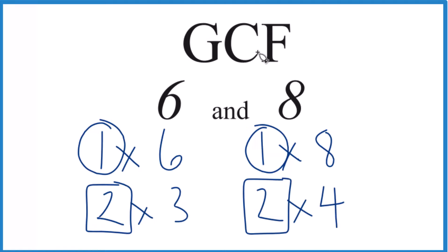That's the greatest common factor. So in answer to our question, the GCF for 6 and 8, that is 2.